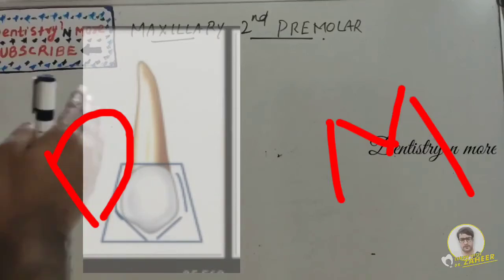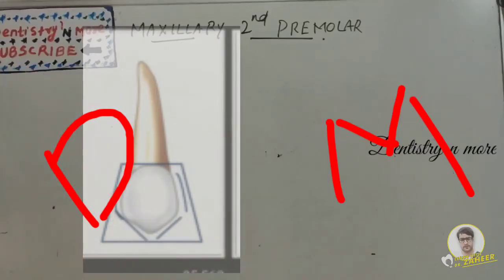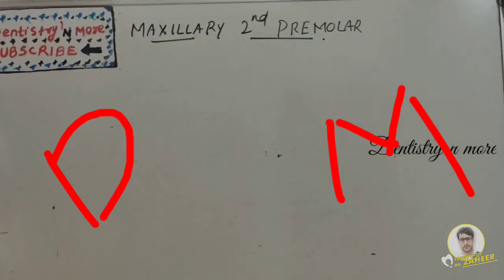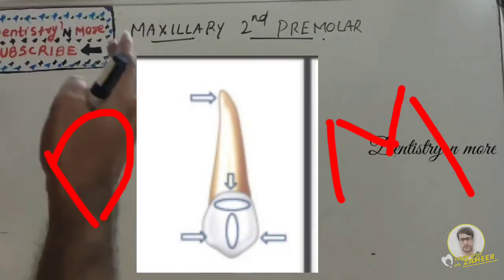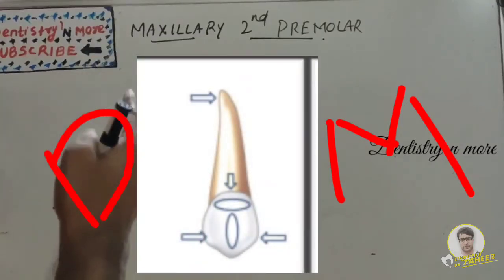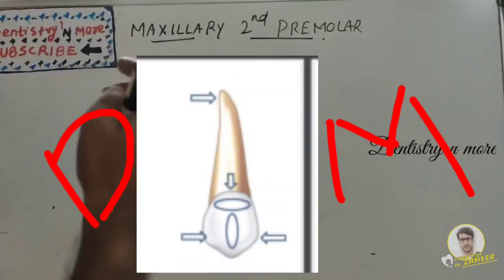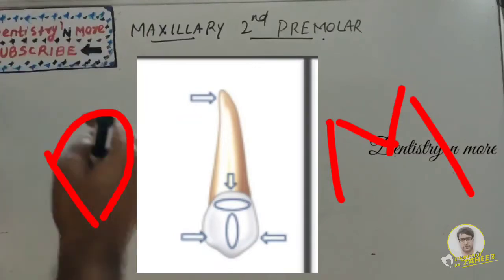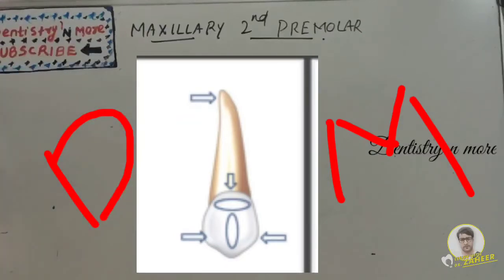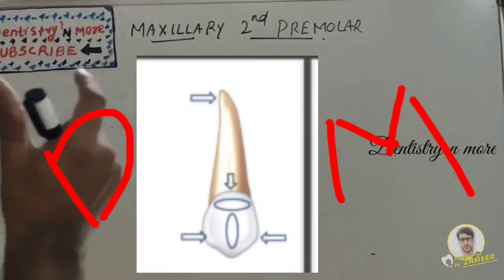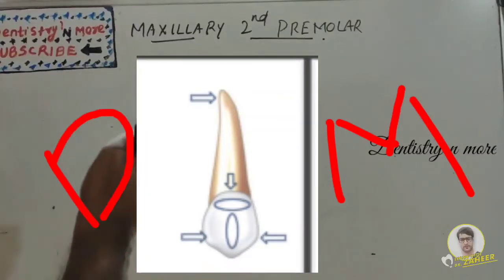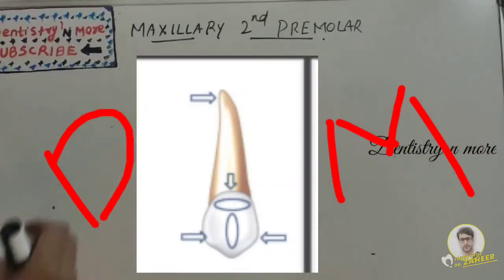The cusp tip is displaced to the mesial side. The contact area on the mesial is at the junction between the middle and occlusal one-third, and the distal contact is at the middle of the middle one-third. There are buccal and cervical ridges. The cervical line is convex with regard to the root, and the root is single, tapering from cervical to apical with a distal curved apex.